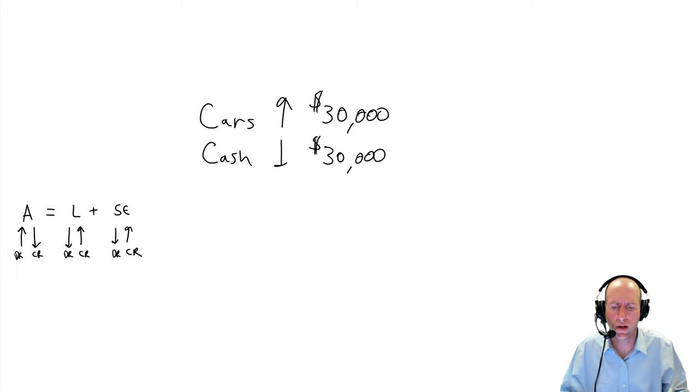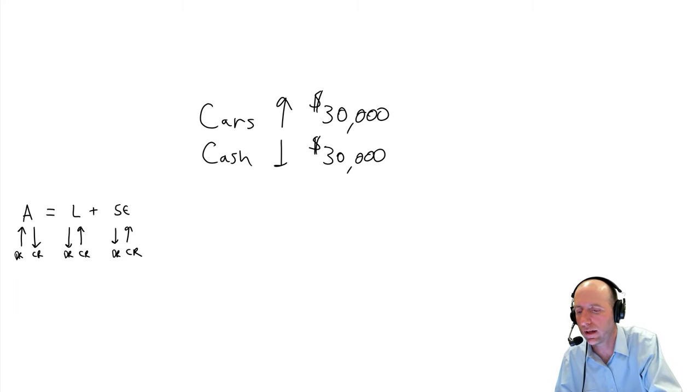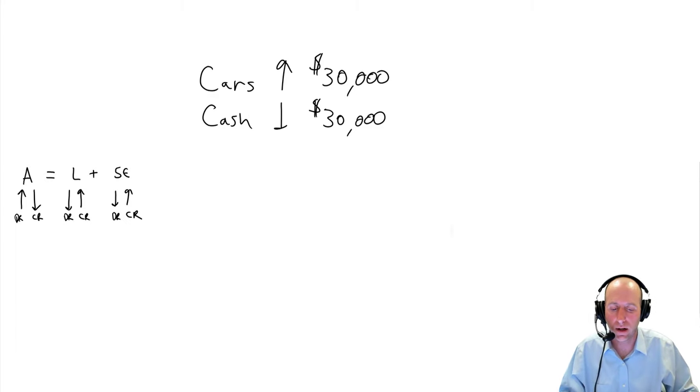Forget what you know about the word debit and credit. It's not going to help you here. Accounting has very specific use for the term, and if you sort of bring some previous baggage in, forget it. It's going to help you just to work from a clean slate here. So, let's look at this transaction, my car for cash transaction. I purchased a car for cash. What is a car? Is it an asset, liability or shareholder's equity? A car is an asset. We have a car increasing by $30,000. Therefore, an asset is increasing by $30,000. Therefore, I should debit that asset.